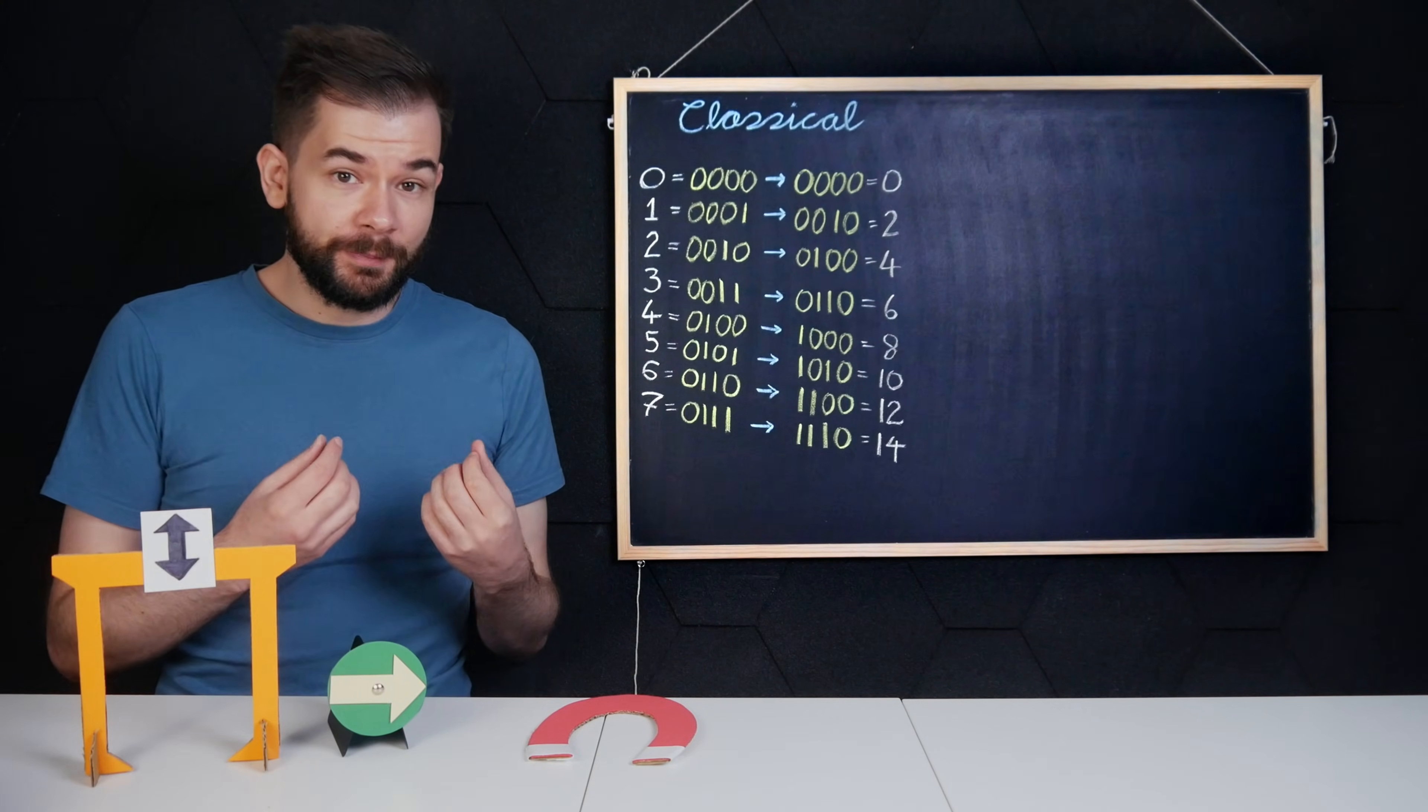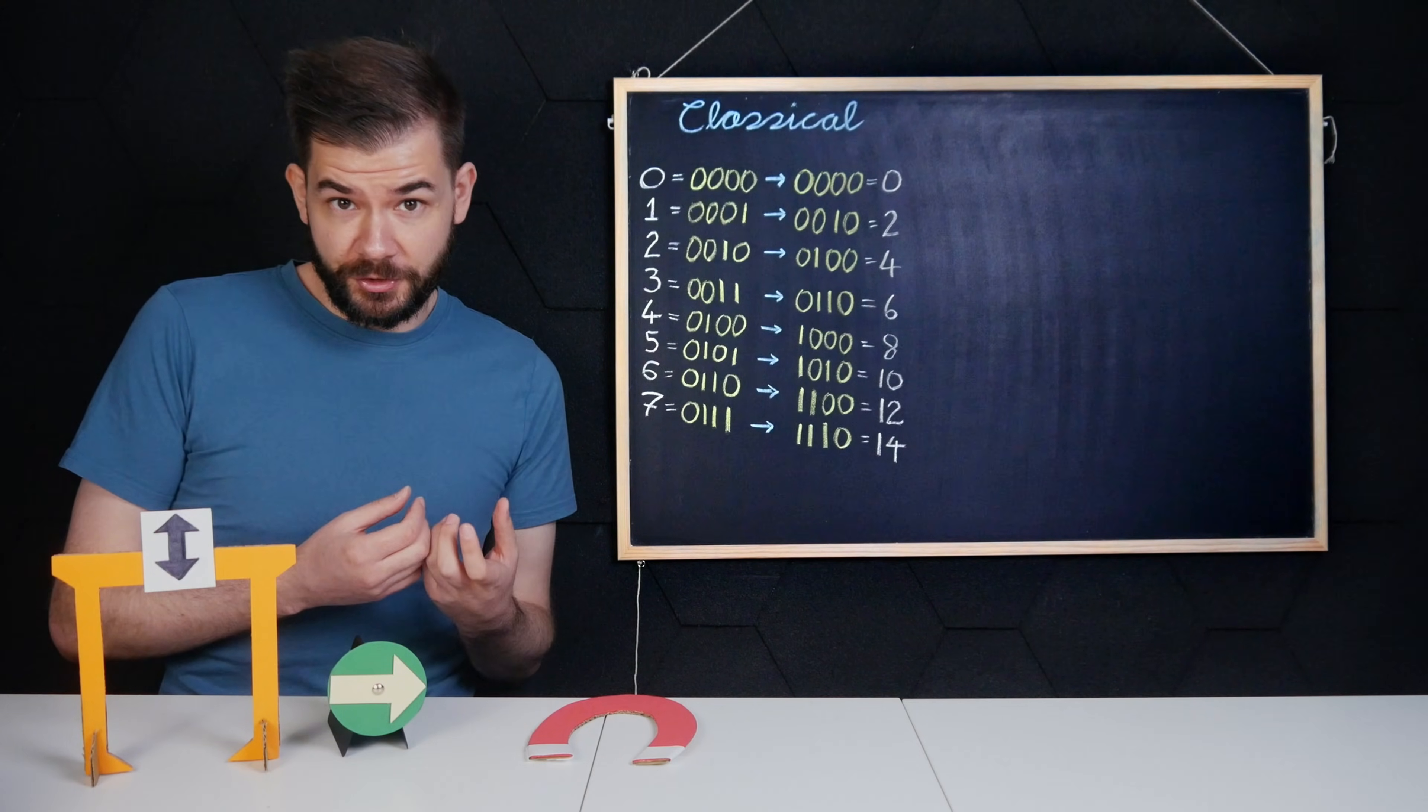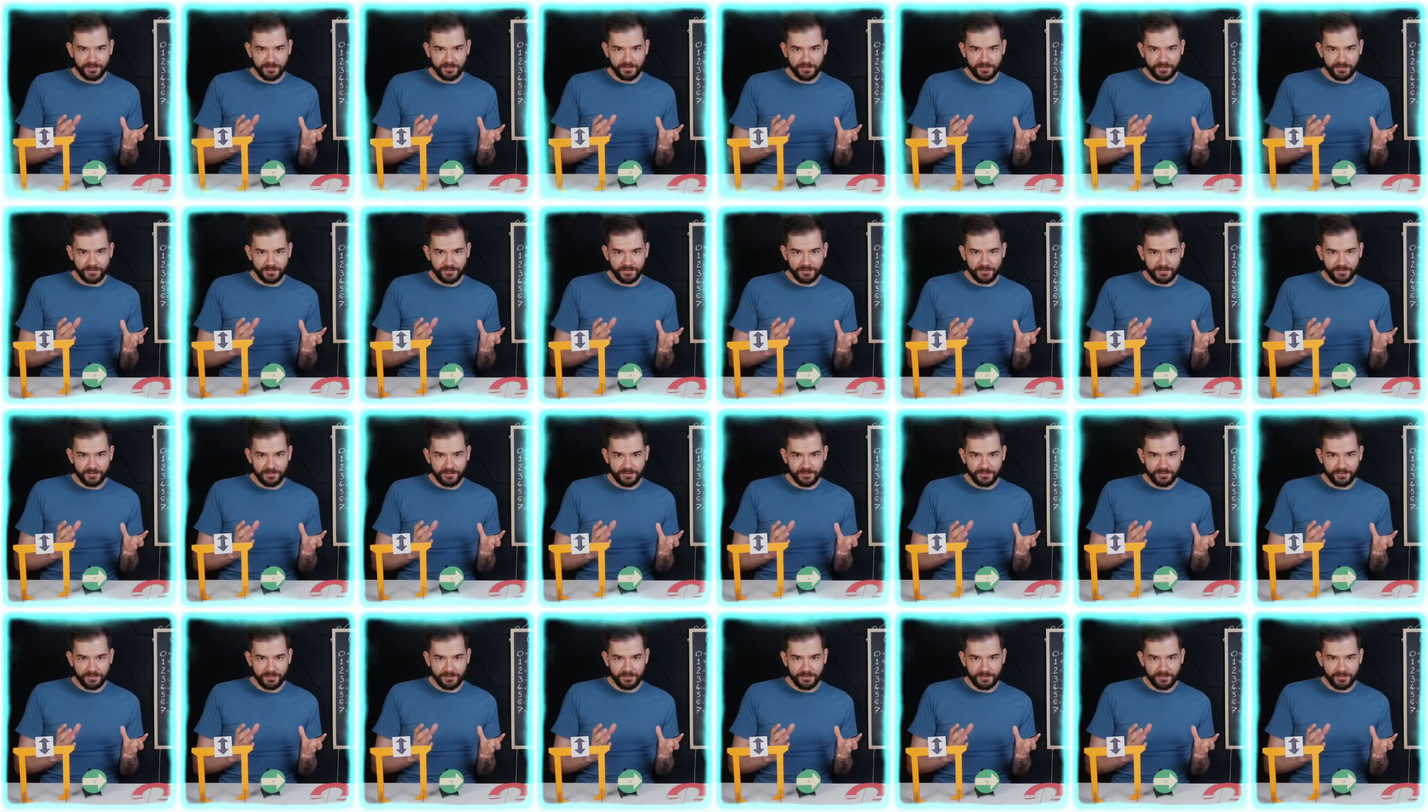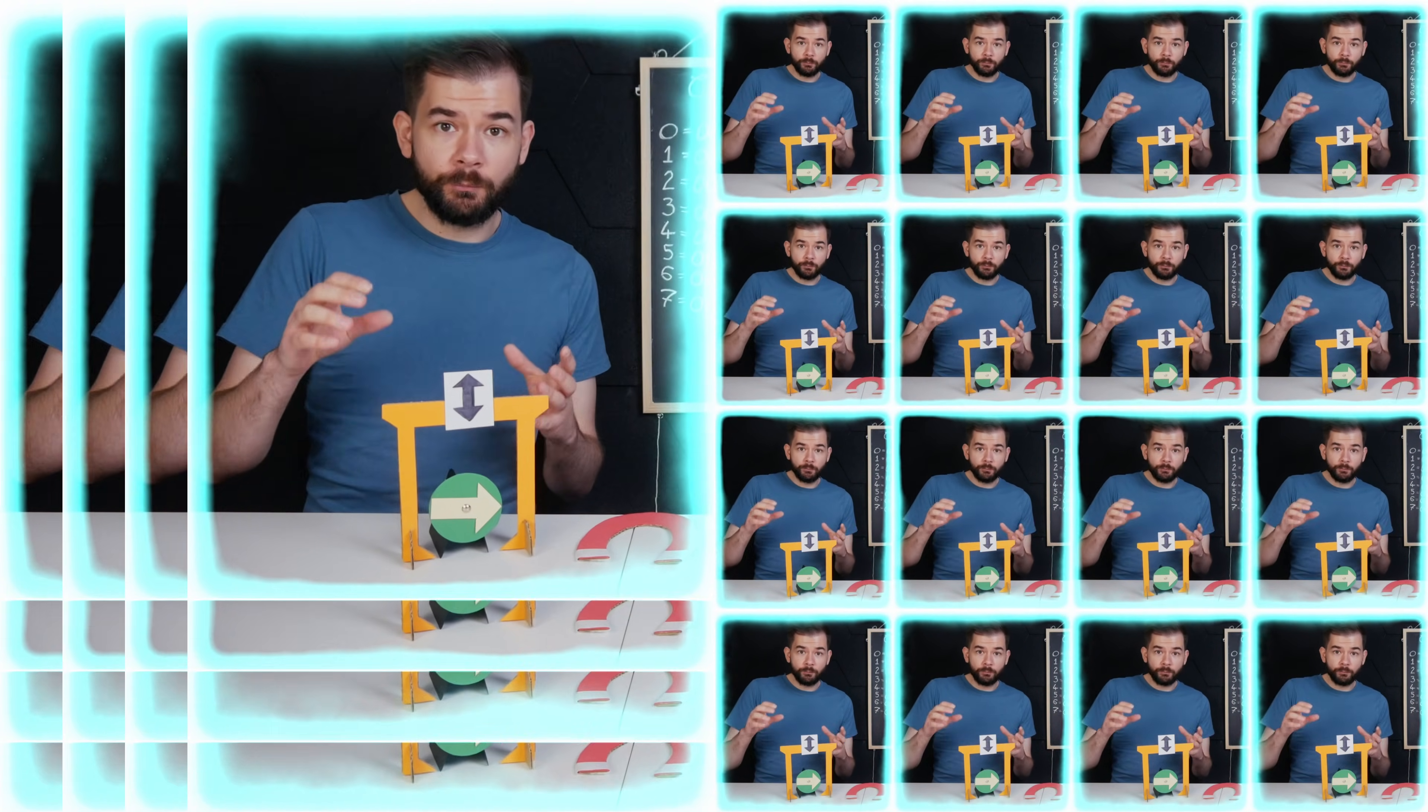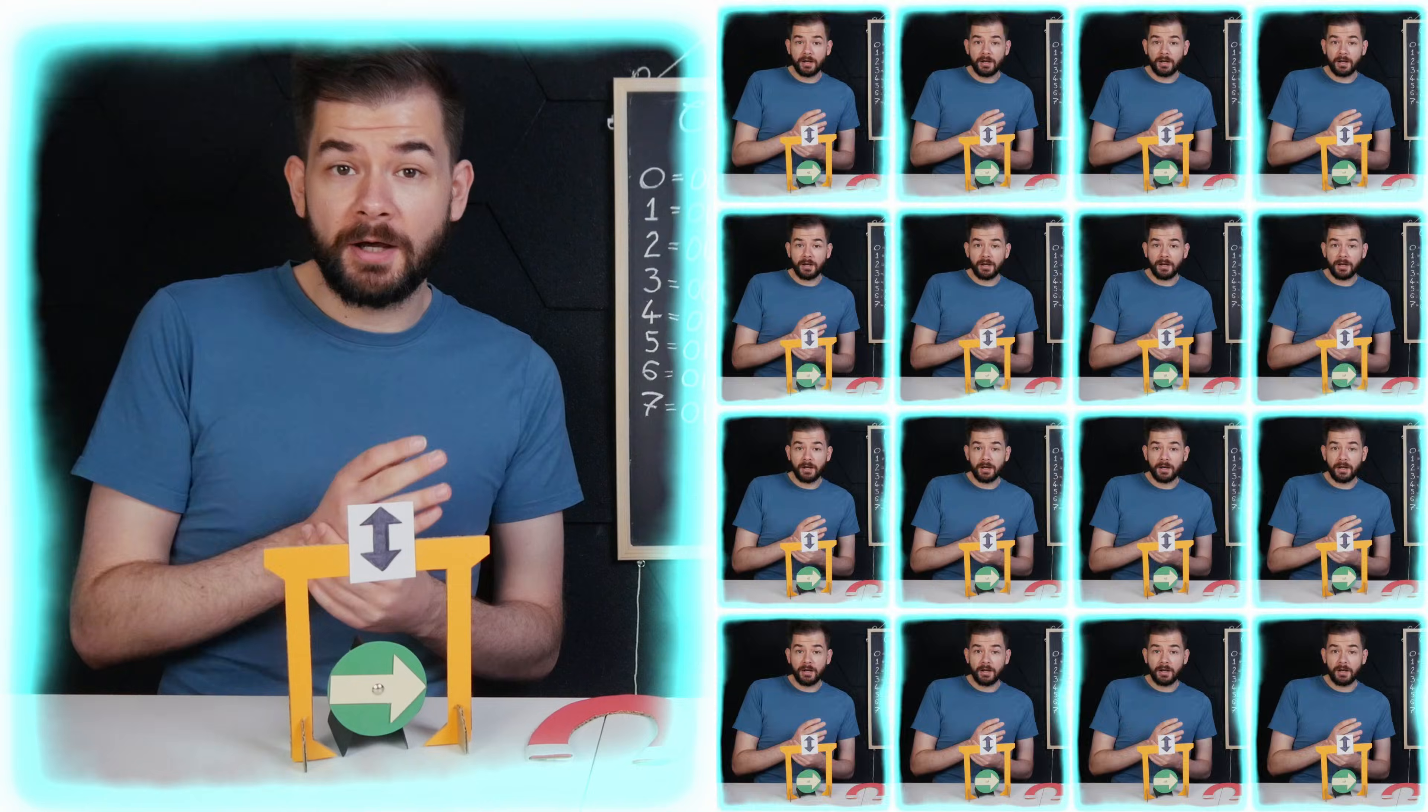Another way to picture this, inspired by the many-worlds interpretation, is that there are effectively infinitely many universes, but in each, when the gate is applied, half of them will give a spin-up result and half a spin-down.